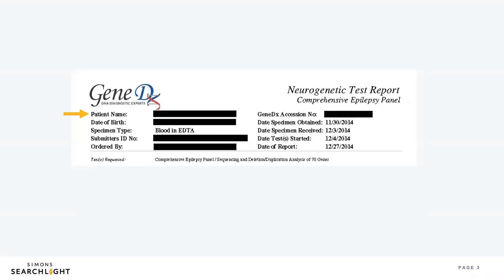Up in the top bars, you'll find demographic information — your or your child's name, birth date, and when the sample was taken, as well as the type of sample such as blood or buccal swabs, which is a cheek swab. Oftentimes, labs will also record dates during the testing process when they received the sample and when it was reported.